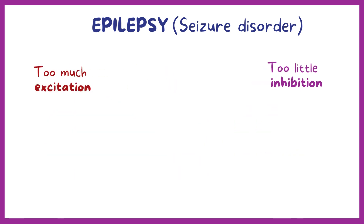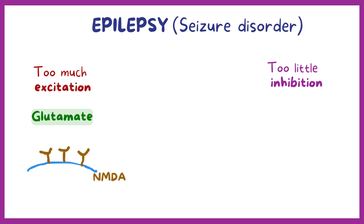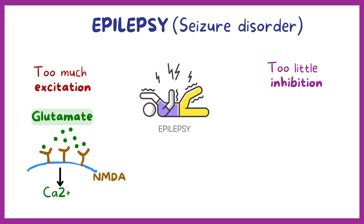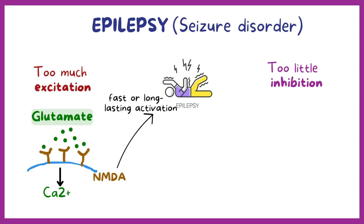The main excitatory neurotransmitter in the brain is glutamate, and NMDA is the primary receptor that responds to glutamate by opening ion channels that let calcium in — a positive ion that tells the cell to send signals. Some patients with epilepsy seem to have fast or long-lasting activation of these receptors.